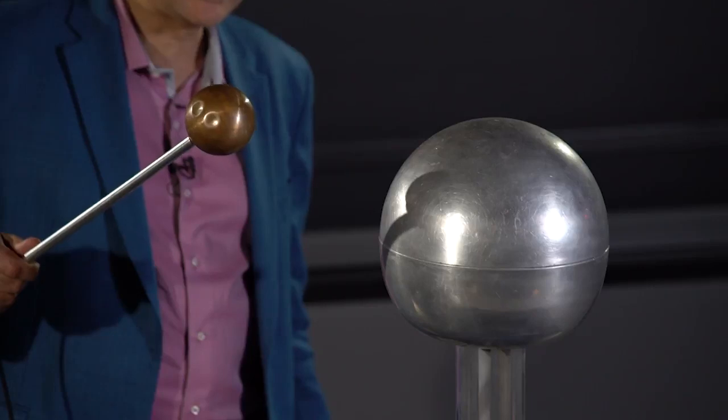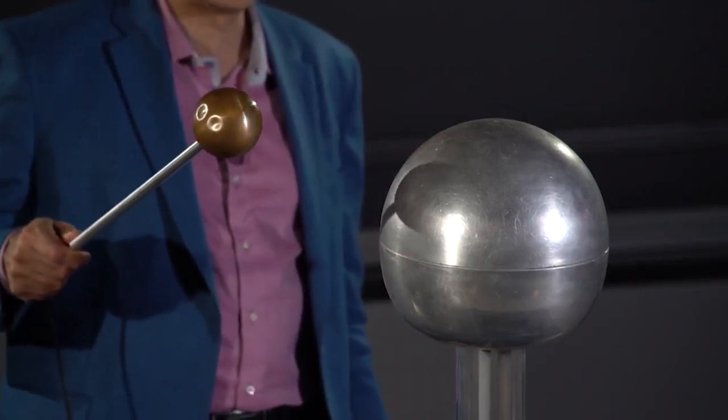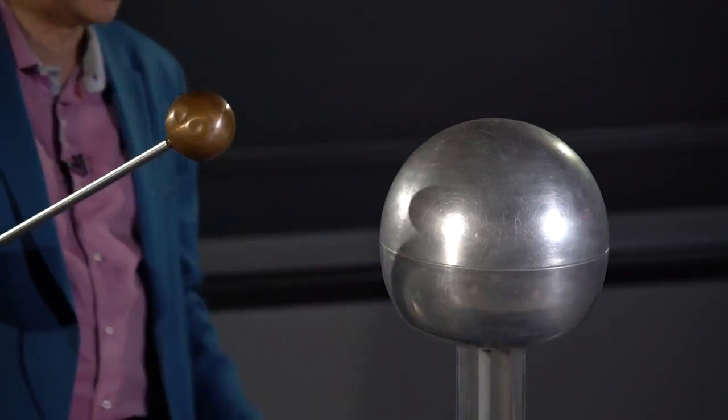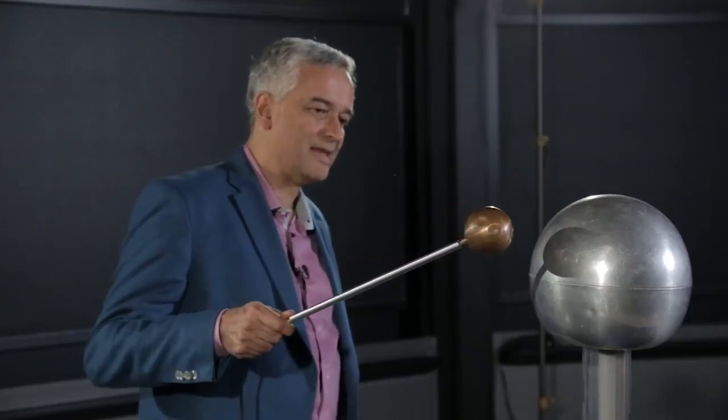And the breakdown voltage of dry air is 33,000 volts per centimeter. So that's roughly 500,000 volts - 500,000 volt potential on that Van de Graaff just before the spark goes off.